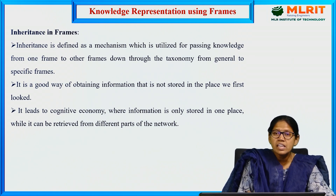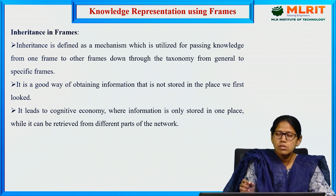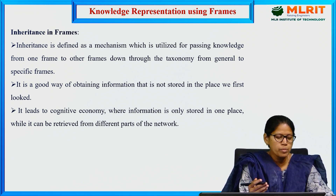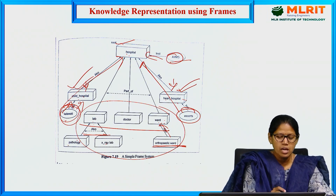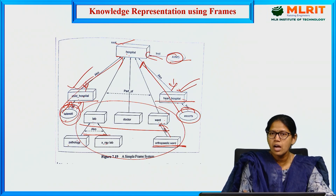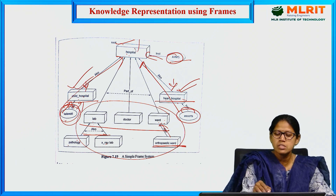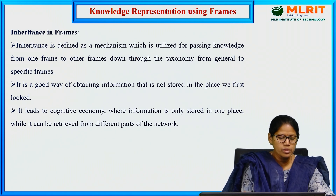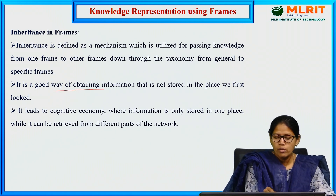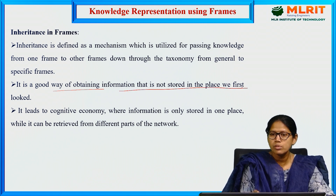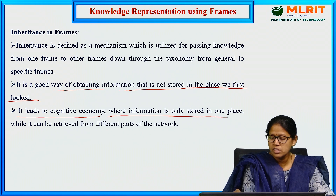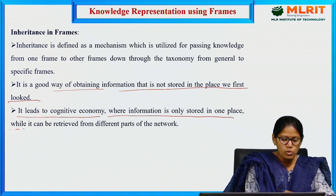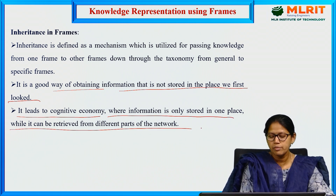Inheritance in frames: child classes acquire properties from the parent class. Child hospital and heart hospital will acquire the properties of the root hospital. This is a good way of obtaining information not stored in place — it leads to cognitive economy where information is stored only once but can be retrieved from different parts of the network.